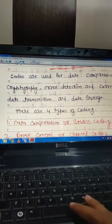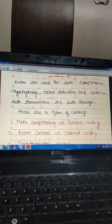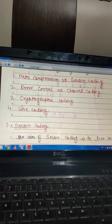There are four types of coding. First one is data compression and source coding. Second one is error control or channel coding. Third is cryptographic coding, and finally line coding.